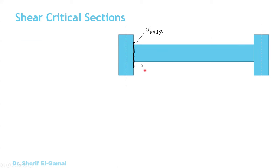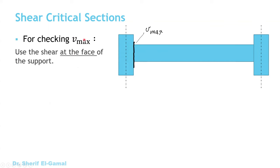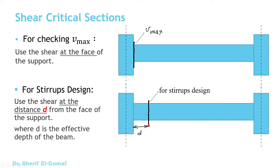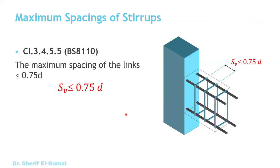For the shear critical section: when checking v against V_max, the critical section is taken at the face of the support. When designing stirrups, the critical section is at a distance d — the effective depth — from the face of the support. We calculate the shear force at this location and then compute the shear stress v_d to use in the stirrup design equations.